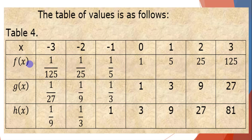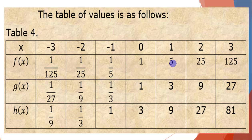For f(x) = 5 raised to x: 5⁻³ = 1/125, 5⁻² = 1/25, 5⁻¹ = 1/5, 5⁰ = 1, 5¹ = 5, 5² = 25, 5³ = 125.